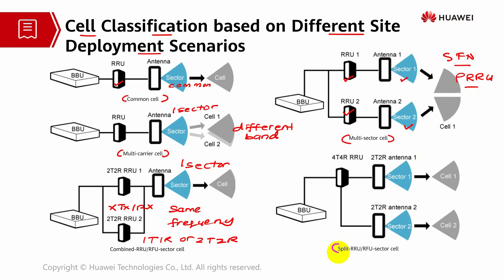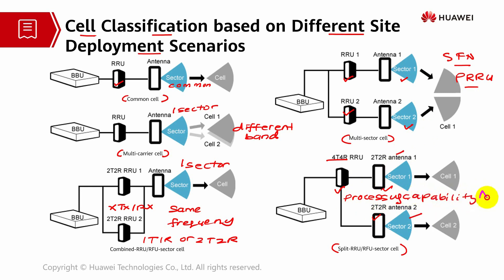The last cell type is the split RRU and RFU sector scenario. In this split scenario, multiple sectors can be established using one type of RRU with multiple TX and RX. This is used when the processing capability does not match the antenna transmission. The most important consideration in this scenario is the processing capability of the RRU and RFU relative to the antenna's transmission capability.